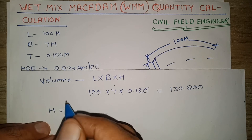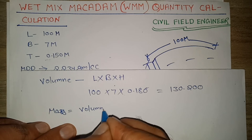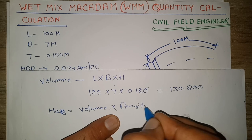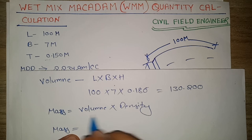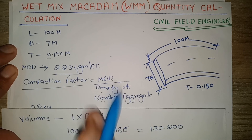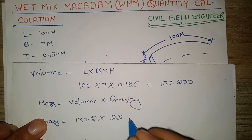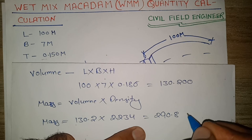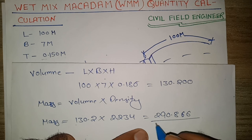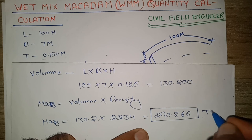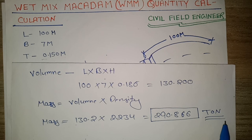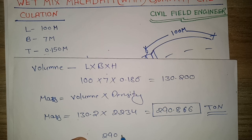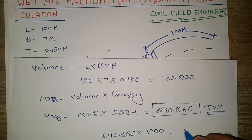How to find the weight of this material? The formula is mass equals volume multiplied by density. Mass equals volume 130.200 cubic meters, density equals 2.234 gram per cc. This gives the material weight in tonnes. If you need material weight in kg, then 290.86 × 1000 equals 290,860 kg. That's very simple.